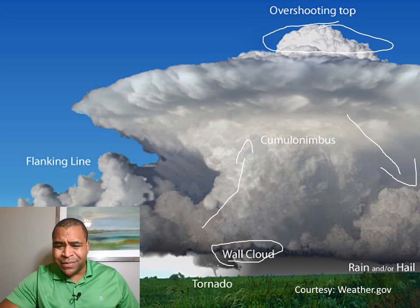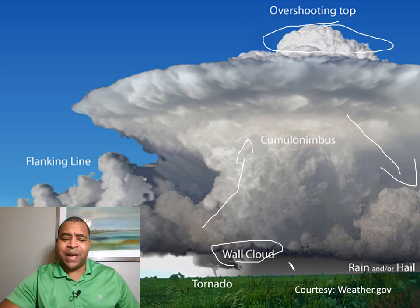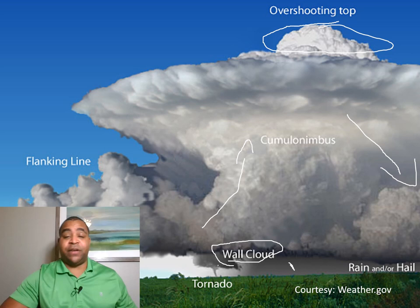Sometimes in front of the wall cloud, you can get rain or hail as well. This is why supercells are nothing to mess with, but they are really beautiful to see from afar, and we always get very concerned every time we see them.